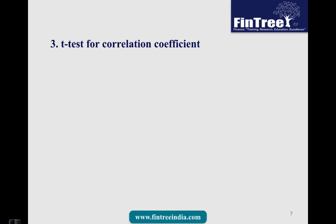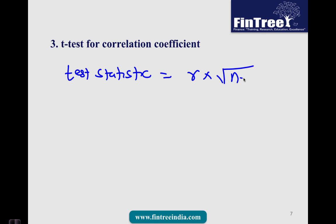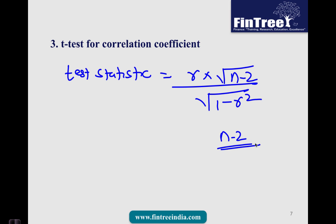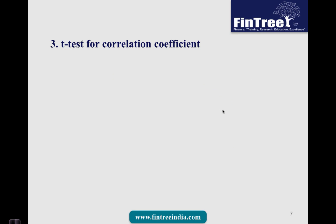Next is the t-test for the correlation coefficient. To perform this t-test, you need to remember the formula for the test statistic, which is r times the square root of (n minus 2) divided by the square root of (1 minus r squared). The degrees of freedom here are n minus 2. Please remember this for your examination — it is a testable concept.